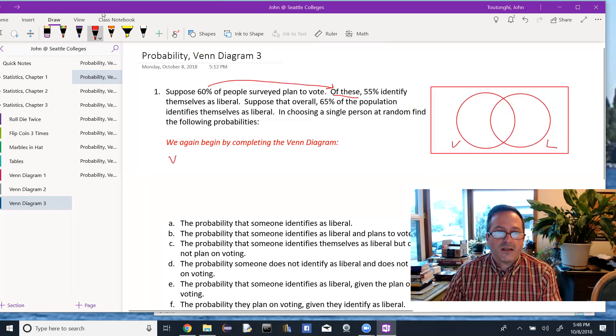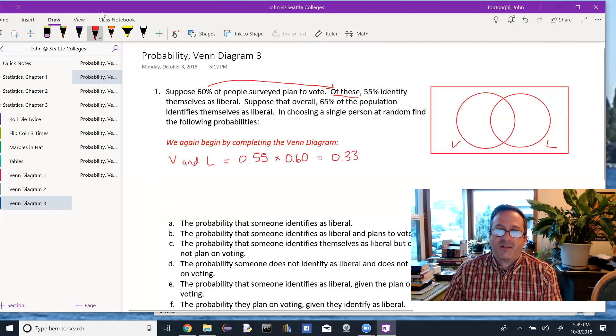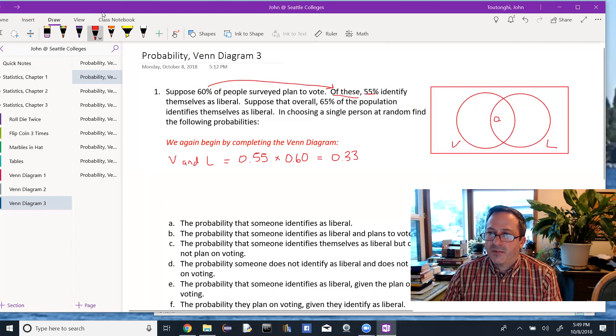So they're voting and they're liberal and that's 55% of the people who are voting, so that's 60%. So we multiply those two things together and that's going to give us 0.33. That is going to be the intersection. I get this because of the people who are voting, of the 60%, 55% identify themselves as liberal. So inside here, the innermost part of my Venn diagram, 0.33.